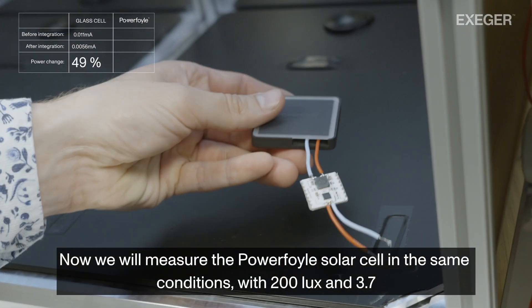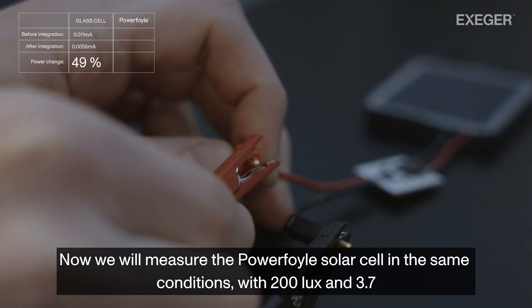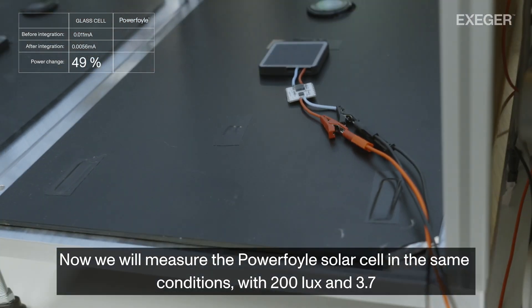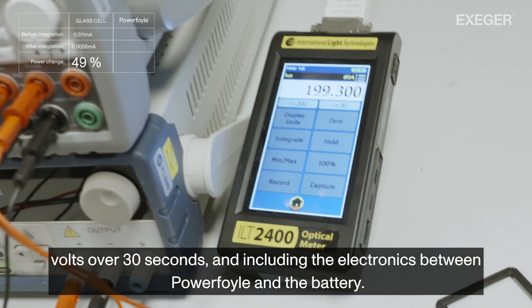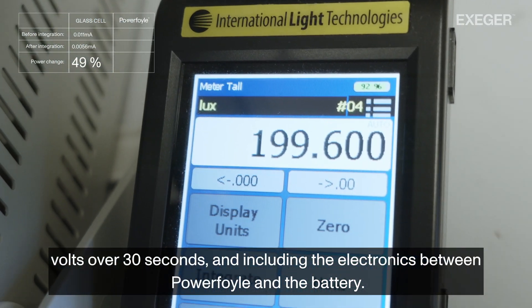Now, we will measure the Powerfoyle solar cell in the same conditions, with 200 lux and 3.7 volts over 30 seconds, and including the electronics between Powerfoyle and the battery.